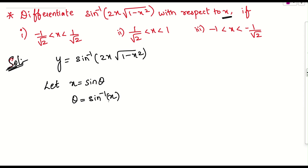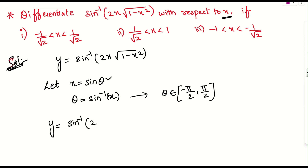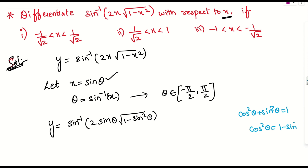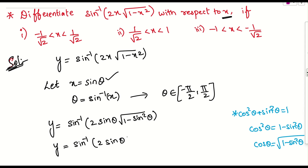What is the range of sin inverse of x? The range of sin inverse of x will always lie between minus 90 to plus 90. So theta lies between minus 90 to plus 90. Now let us substitute: y equals sin inverse of 2 into sin theta into root of 1 minus sin square theta. We know that cos square theta plus sin square theta equals 1, so cos square theta equals 1 minus sin square theta. Therefore, cos theta equals root of 1 minus sin square theta.